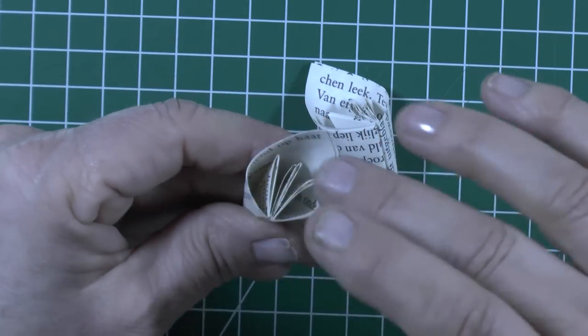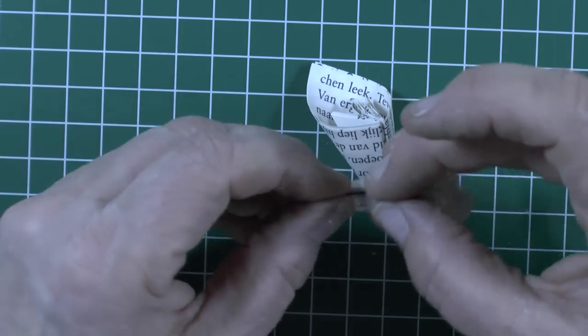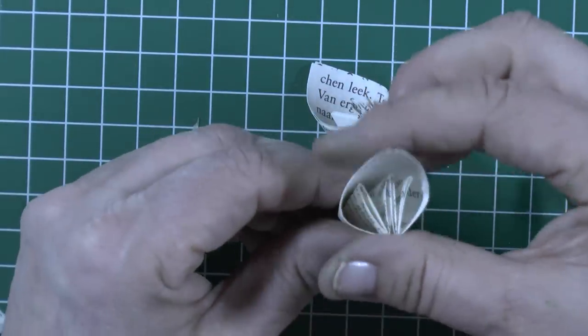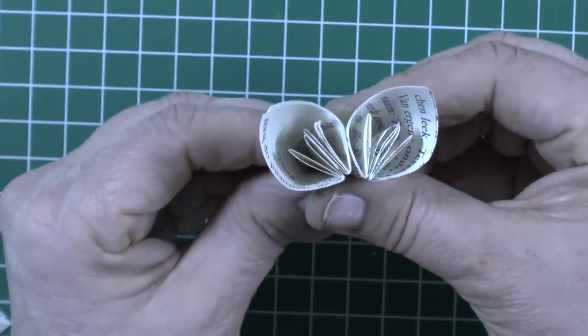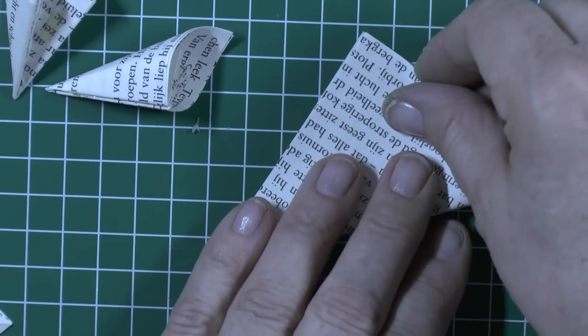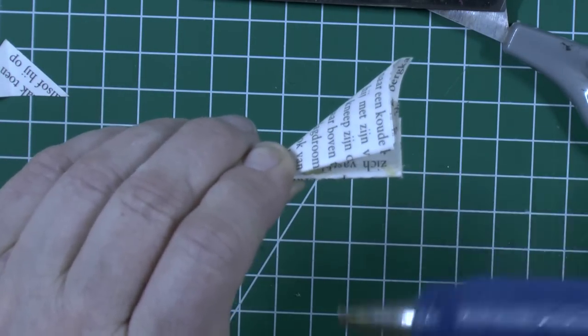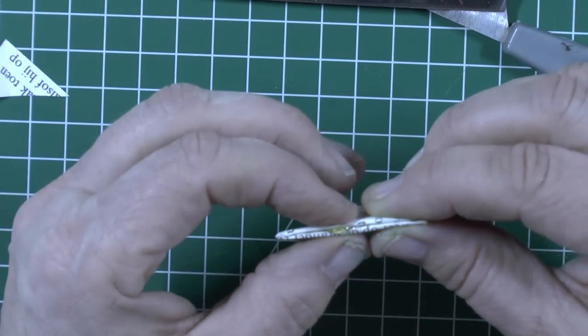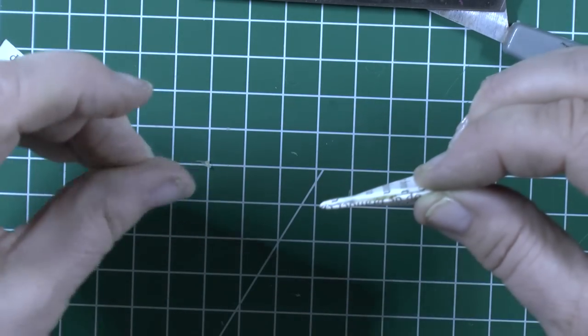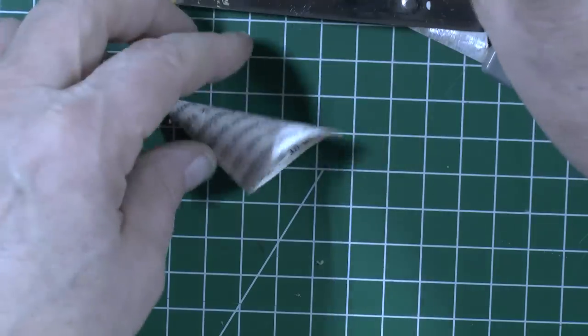Don't squeeze too hard. Because you should not bend this side. So you can squeeze here, but not there. Because it has to be round. Now I have two petals. Do it once again. Fold it. Some glue between. And squeeze. And now I have already three petals.